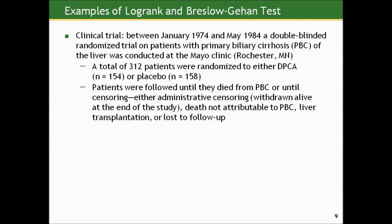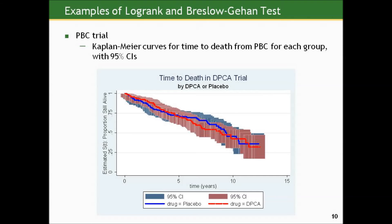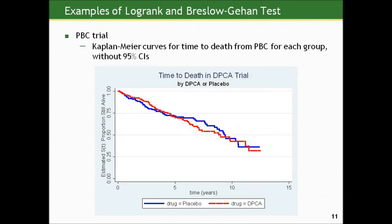They were censored because they were taken from life for a reason other than PBC — or if they received a liver transplantation, or were lost to follow-up. Here are the Kaplan-Meier curves for time to death for each group with the 95% CIs at each event time. You can see that putting confidence intervals on this graph is almost absurd because with 312 people total, there are so many event times between the two groups that you can't make heads or tails of those confidence intervals.